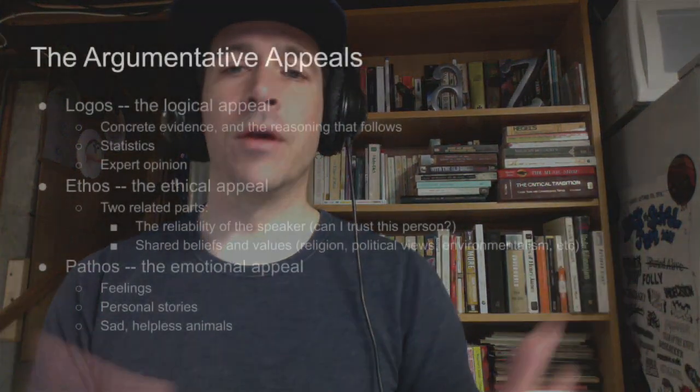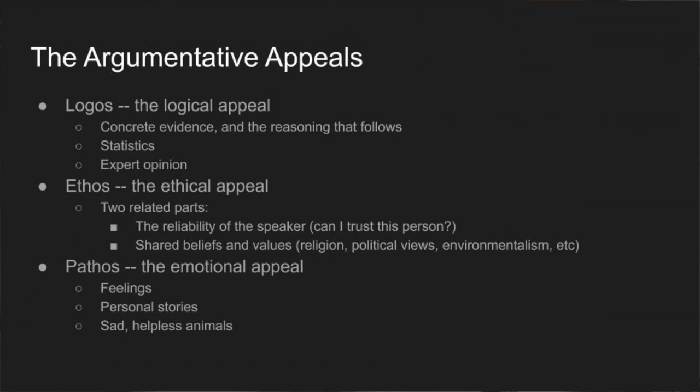So those are the traditional argumentative appeals — logos, ethos, and pathos — and some examples of each. Now give them a shot in this week's discussion, and try as well as you can to incorporate each of the appeals as appropriate in your research article when you build it.